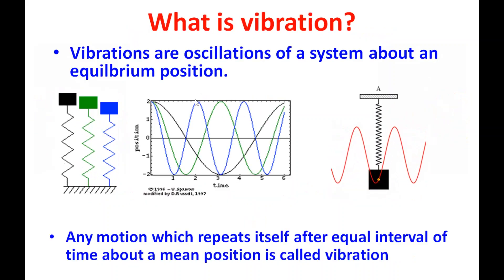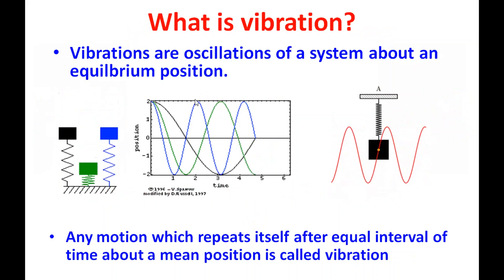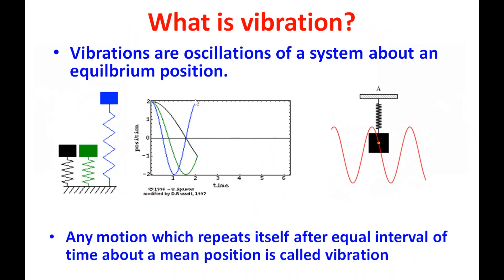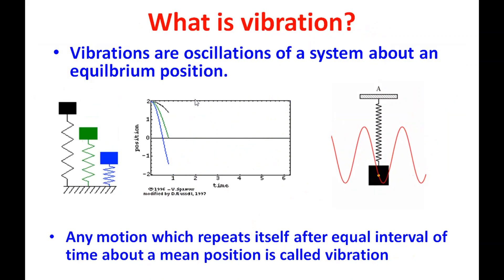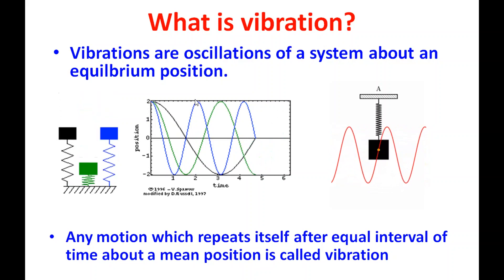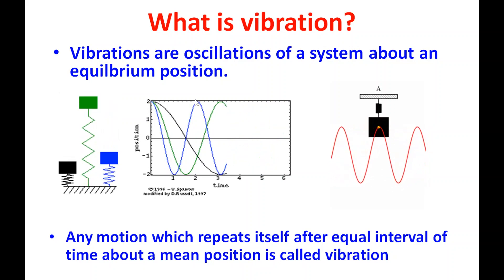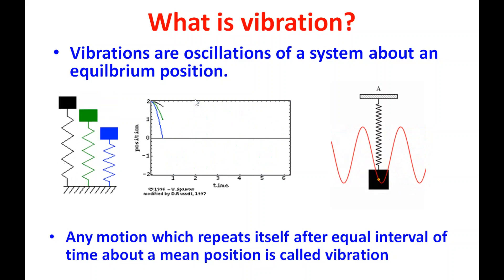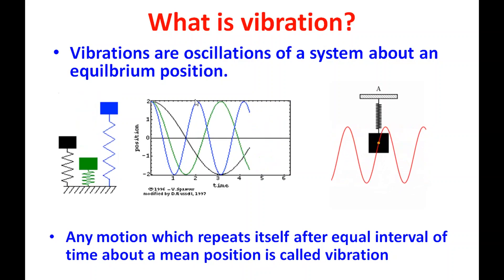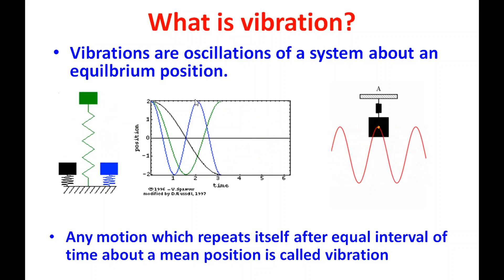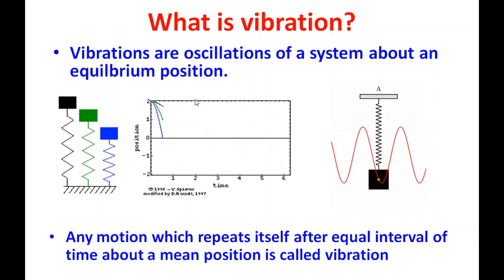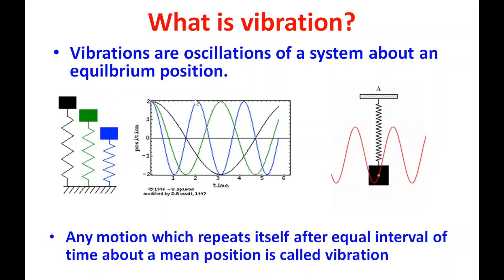In the last part, we discussed what vibration is, how to define a vibration system, what the elements of a vibrating system are, and how to define the vibration system using simple harmonic motion. In simple words, vibration is a repeated motion of a body with respect to a mean position. To define this repeated motion, we use the sinusoidal waveform, that is, simple harmonic motion.